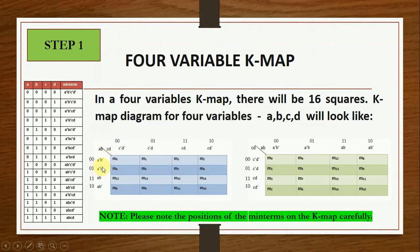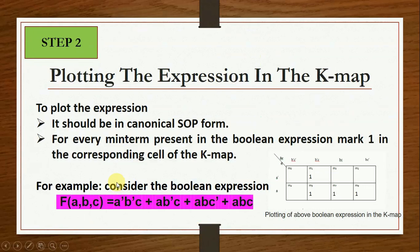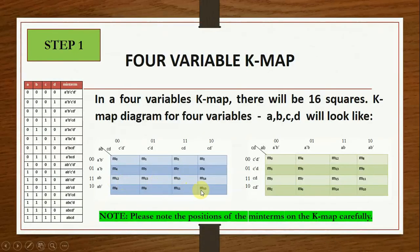The minterm positions in the 4-variable KMAP are M0 through M15. With AB on rows and CD on columns: M0, M1, M2, M3 in the first row; M4, M5, M6, M7 in the second; M8, M9, M10, M11 in the third; M12, M13, M14, M15 in the fourth. If you place CD on rows and AB on columns, the minterm arrangement changes accordingly — please look at the position of minterms very carefully.